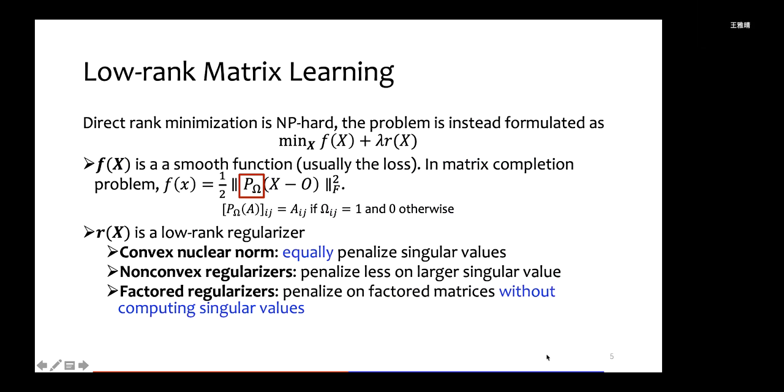Three kinds of popularly used low rank regularizers are summarized below. The first one, convex nuclear norm, is the tightest convex surrogate for the rank. It equally penalizes singular values and has been analyzed for decades. The second one is the non-convex regularizers, which are usually adaptive, meaning they penalize less on the large singular values.